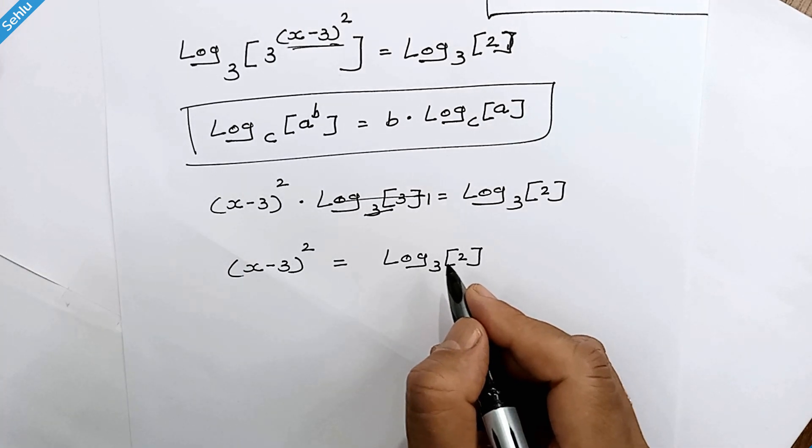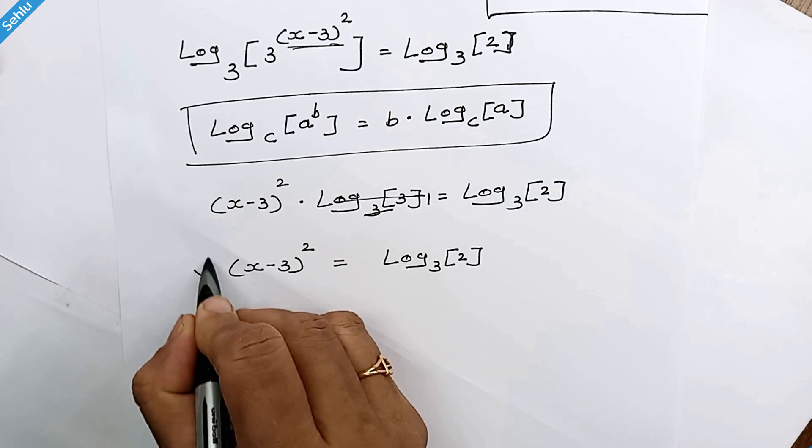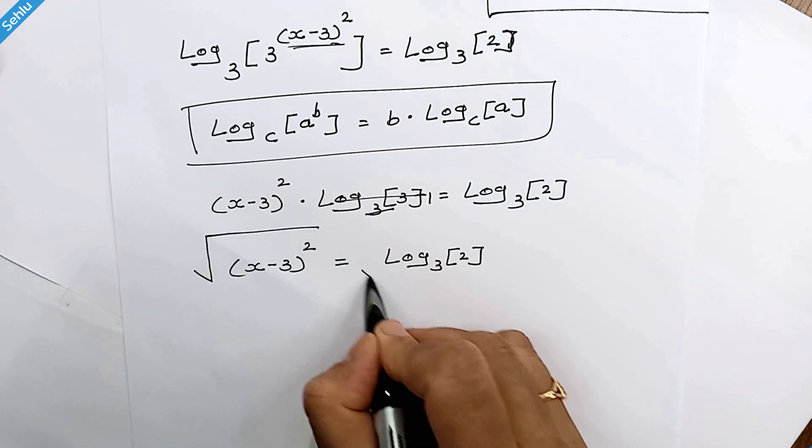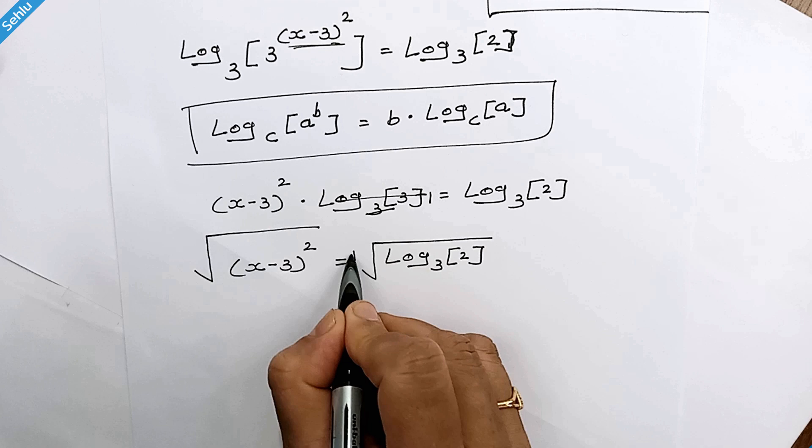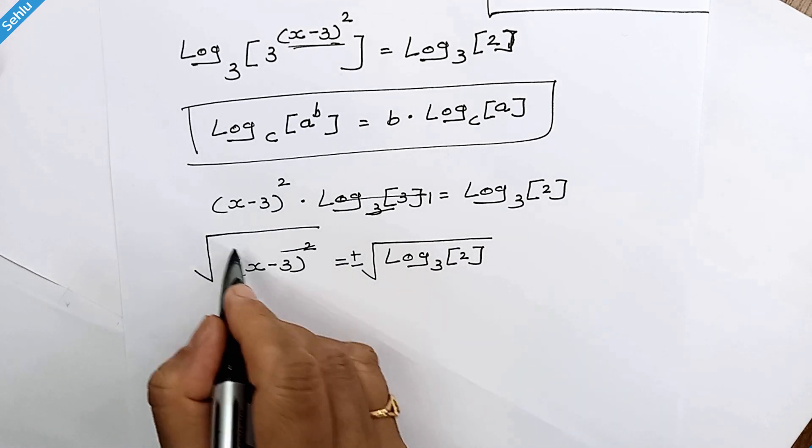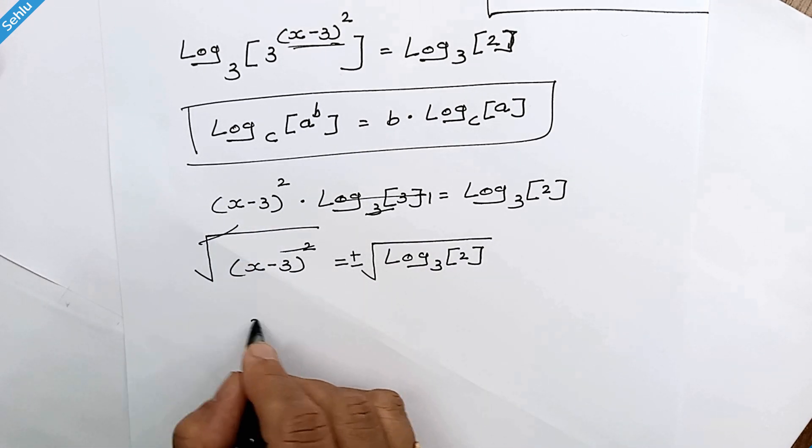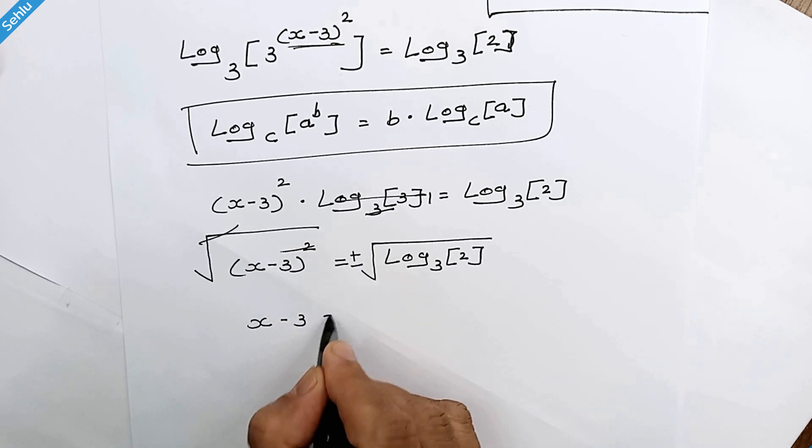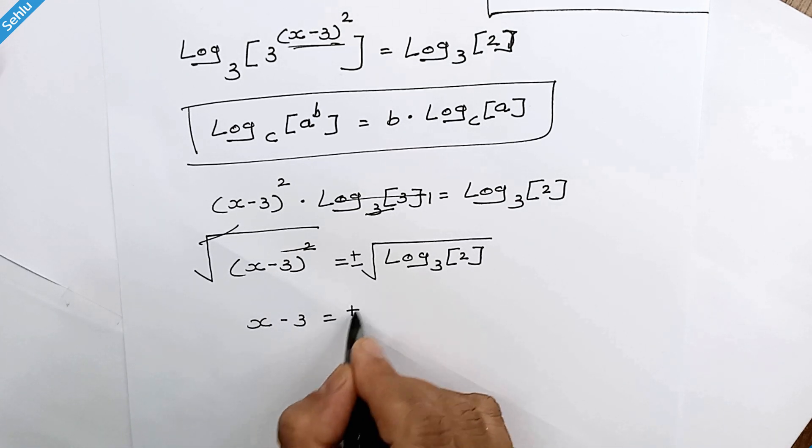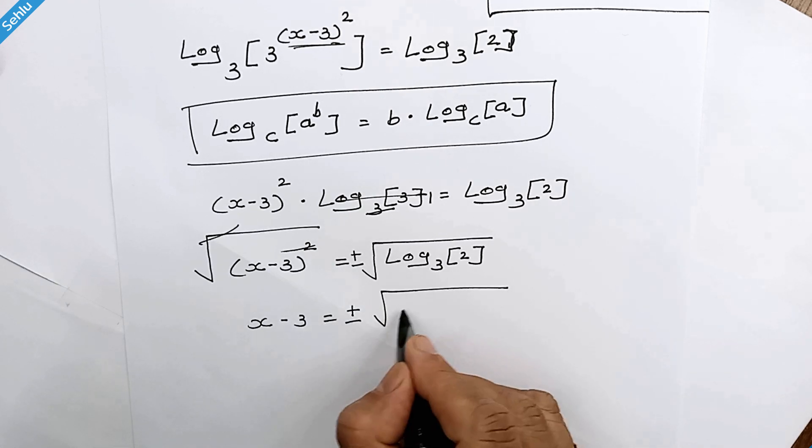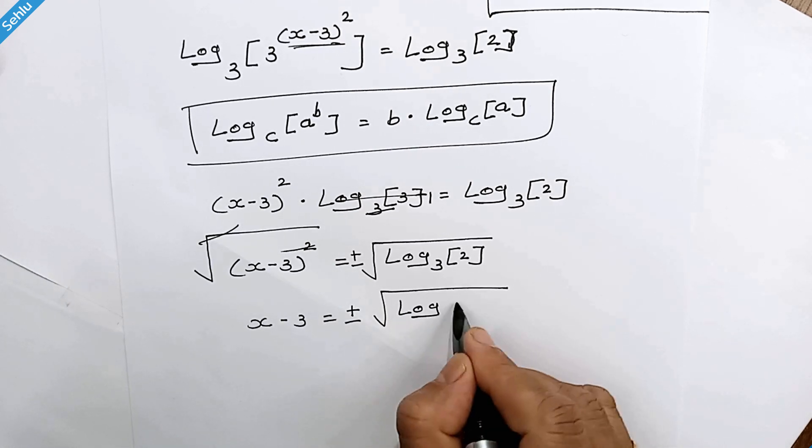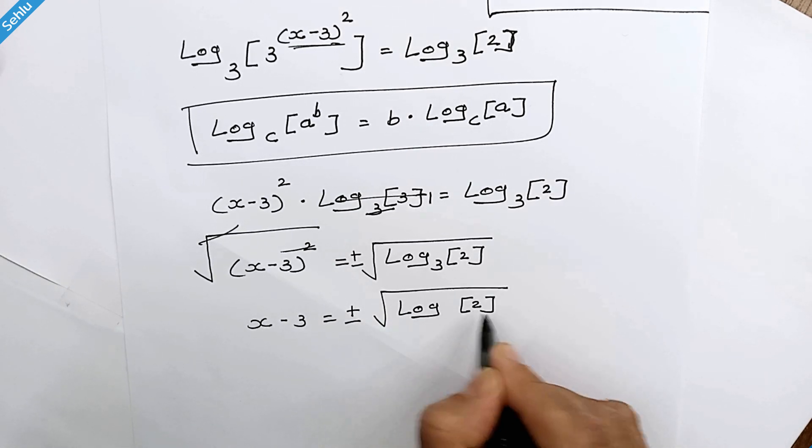Now we will apply square root to both sides. So this square and square root will be cancelled. So it will be x - 3 equals plus or minus square root of log base 3 of 2.